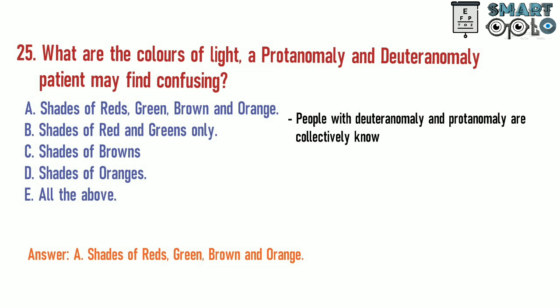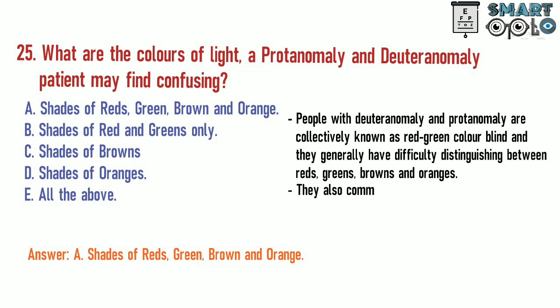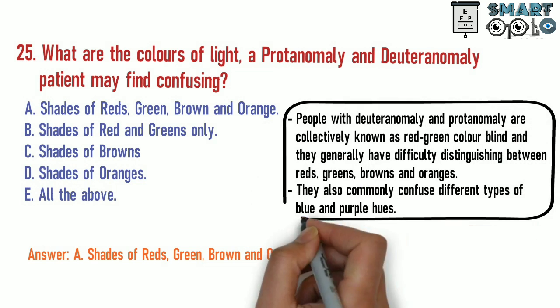People with deuteranomaly and protanomaly are collectively known as red-green colorblind and they generally have difficulty distinguishing between red, green, brown, and orange. They also commonly confuse different types of blue and purple hues.